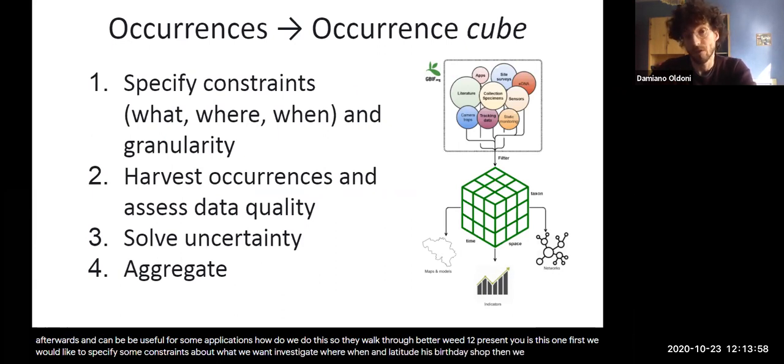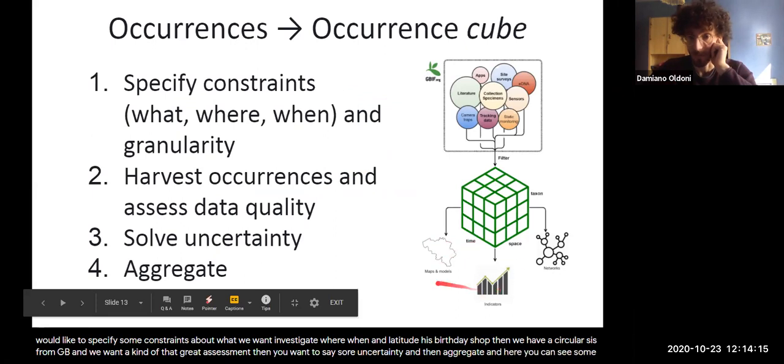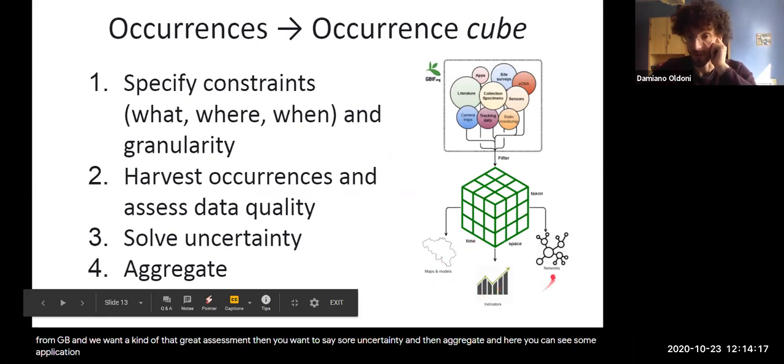Then we harvest occurrences, for example from GBIF, and we want a kind of data quality assessment. Then we want to solve uncertainty and then aggregate. And here you can see some applications that we will discuss afterwards.